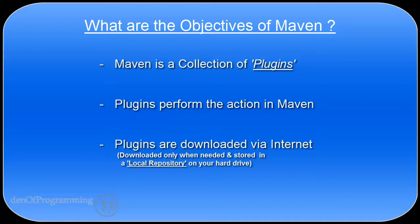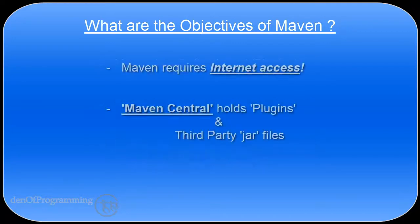You can think of a plugin as a JAR file — they are typically written in Java and downloaded by Maven from its central repository, then stored on your local hard drive in a local cache which in Maven terms is called a local repository. This technique of using components, or in Maven speak plugins, makes it very easy to update Maven with newer versions as they become released. Maven only ever installs what it actually needs. You will need internet access as Maven needs it to contact its central repository, known as Maven Central.